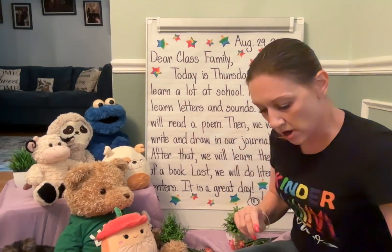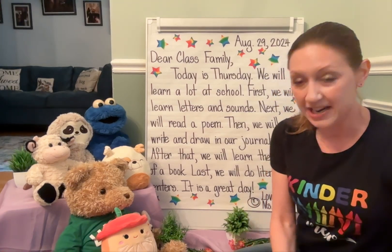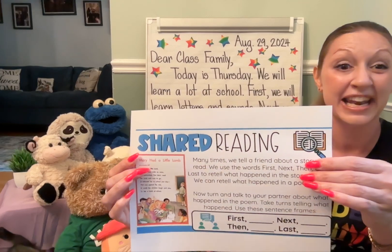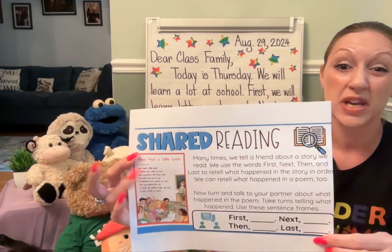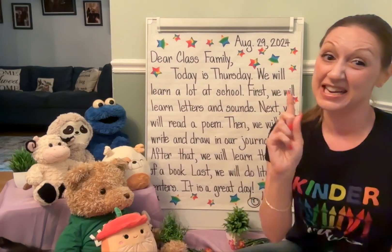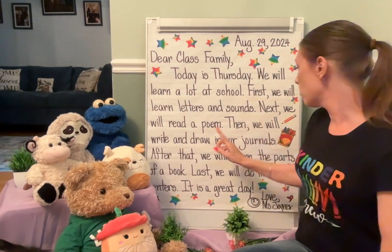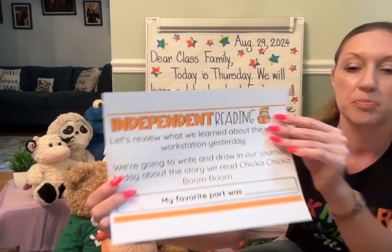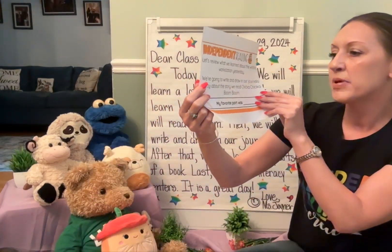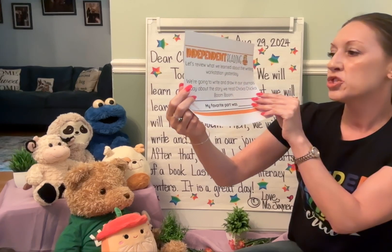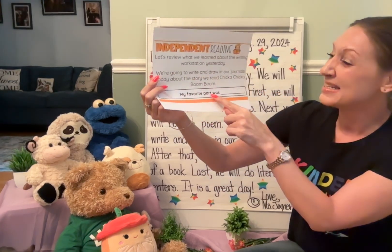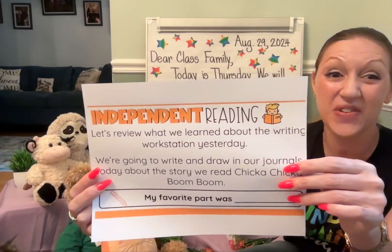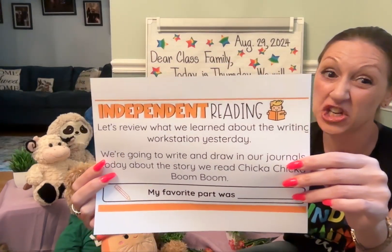Next, we will read a poem. We will be reading 'Mary Had a Little Lamb' and sequencing that poem with first, next, then, and last — doing that together as we re-read the poem today in kindergarten. Then we will write and draw in our journals, reflecting on 'Chicka Chicka Boom Boom.' You're going to write and draw about that using the sentence stem: 'My favorite part was...' and share your favorite part of 'Chicka Chicka Boom Boom.'